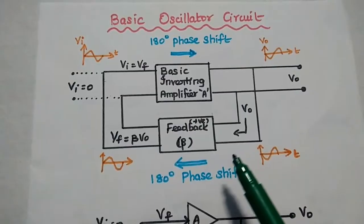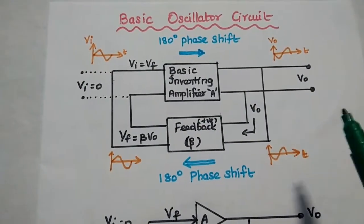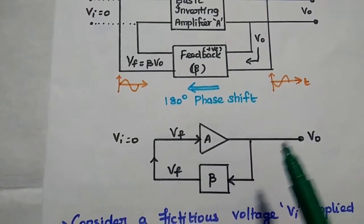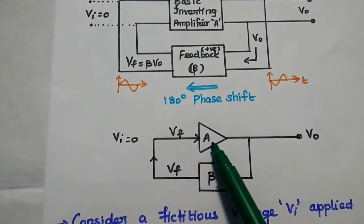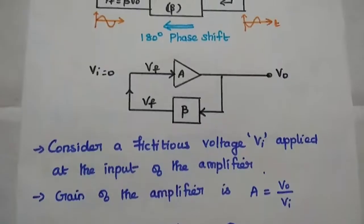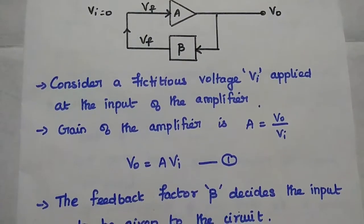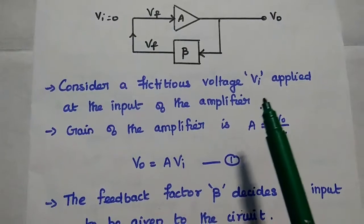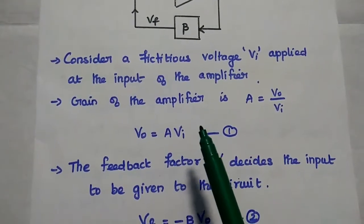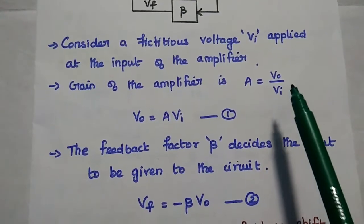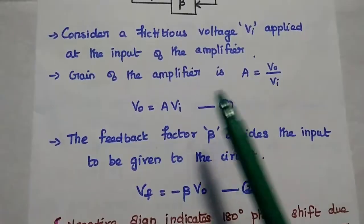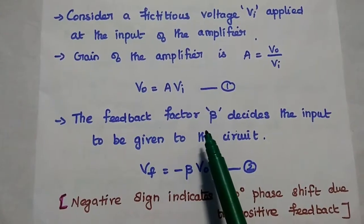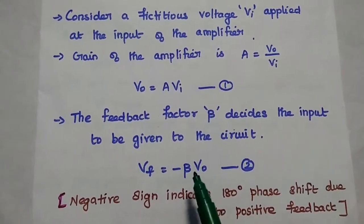If the feedback is adjusted so that the loop gain Aβ is equal to 1, we can consider a fictitious voltage VI applied at the input of the amplifier — it is an imaginary one. The gain of the amplifier is A, that is equal to output voltage divided by input voltage. From this we get VO equal to A times VI. Consider this as the first equation.